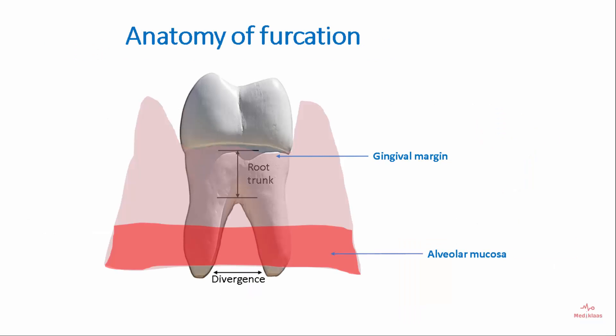Regarding the anatomy of furcation, a tooth has a root trunk and the roots show the presence of divergence. The fornix, or roof of the furcation entrance, is right beneath the roof of the furcation, and the furcation entrance is the area right apical to the roof of the furcation.